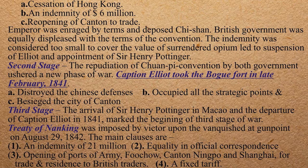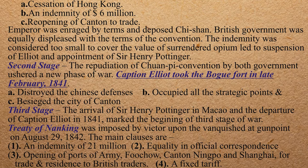In the third stage, Sir Henry Pottinger led British forces, and the Treaty of Nanking was signed on August 29, 1842. The main terms of the Treaty of Nanking included: a war indemnity of 21 million; opening of new ports for trade and residence; equality in official correspondence; and a fixed tariff on trade.